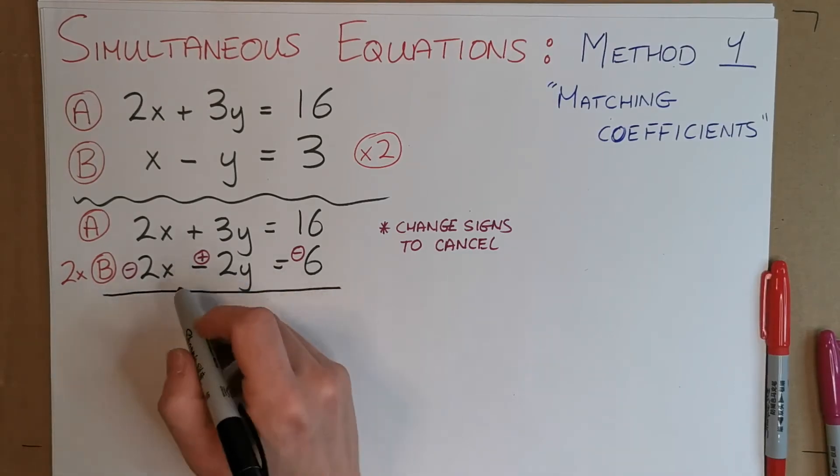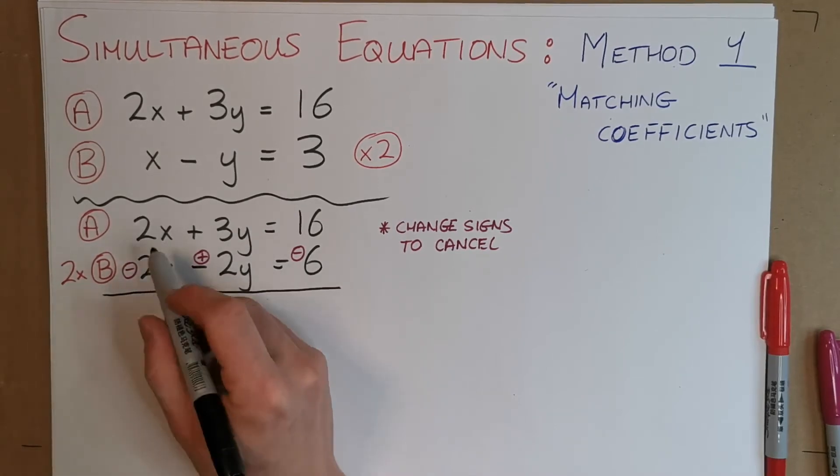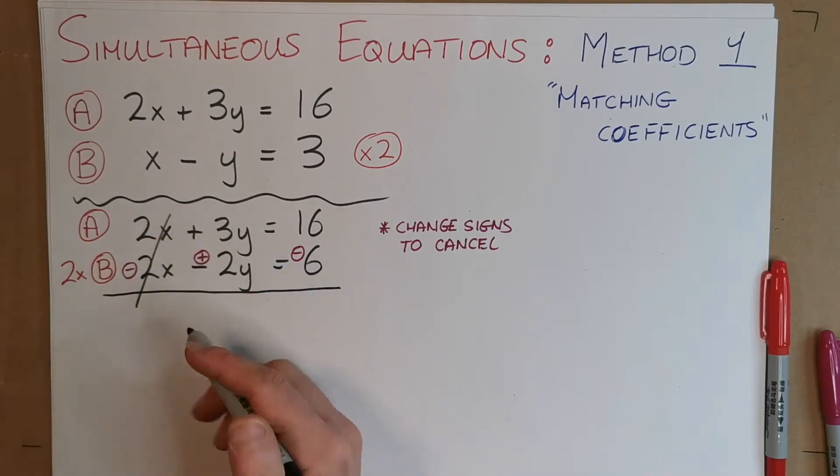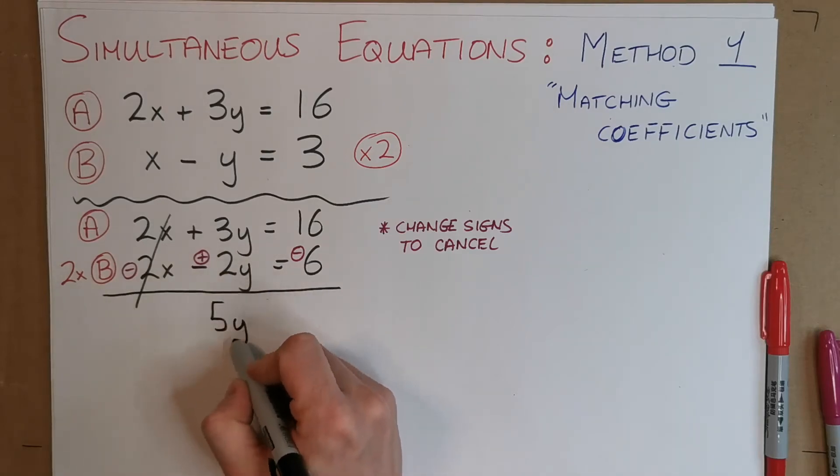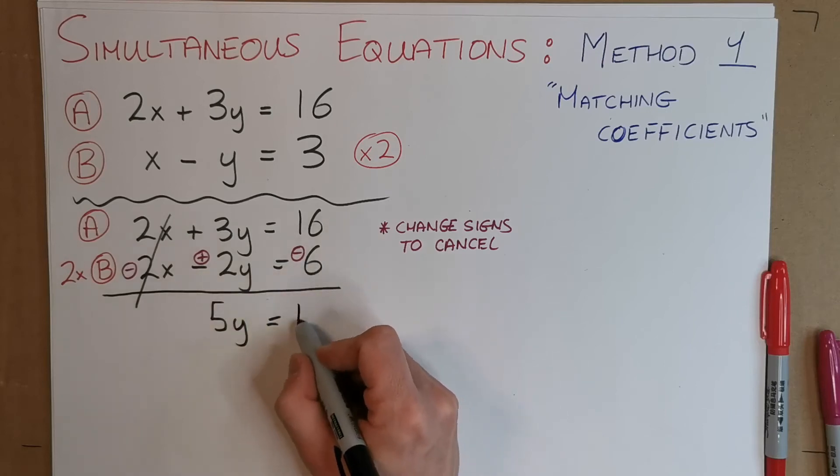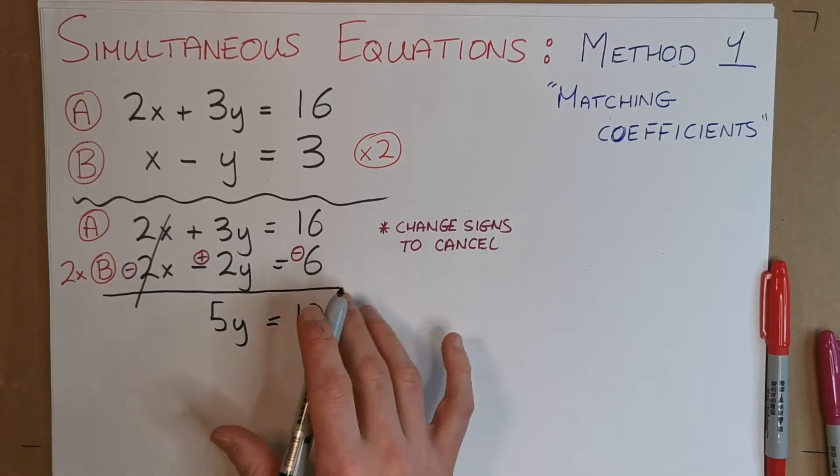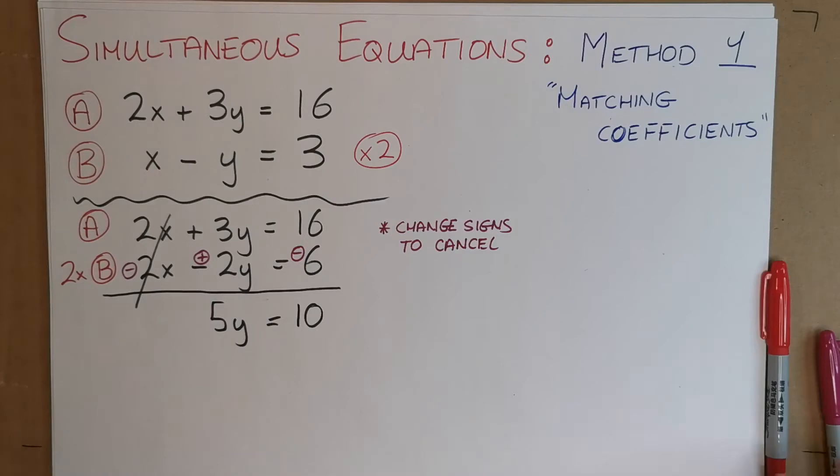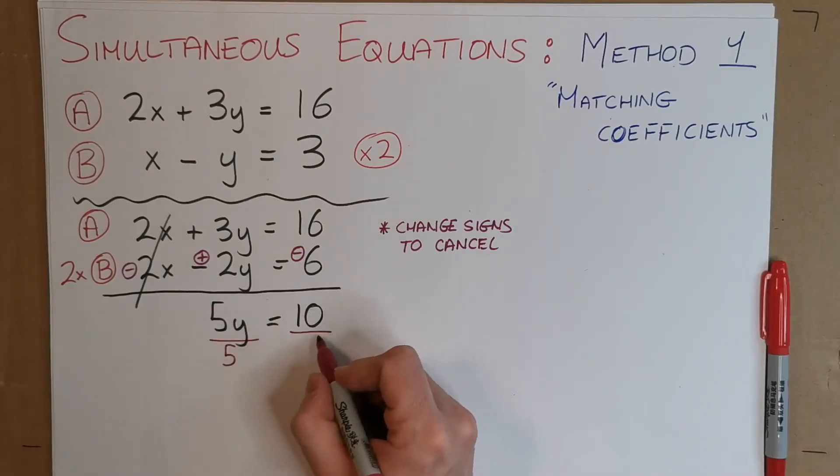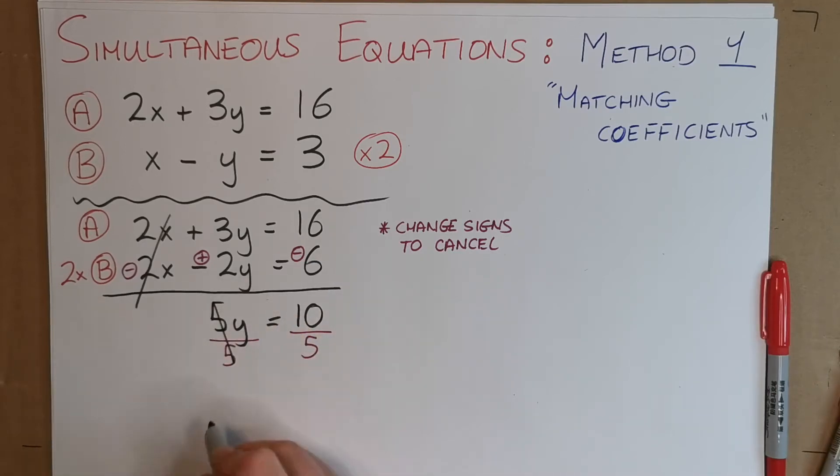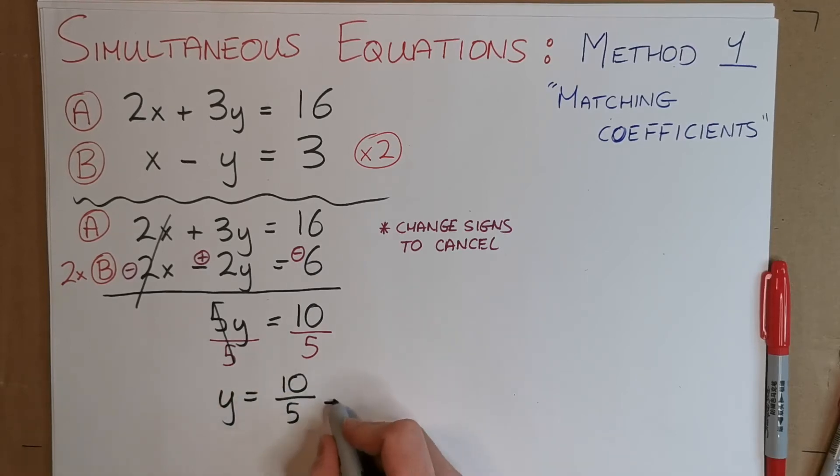Now I draw a line underneath. And I add. It might seem like subtract, but that's not what you're doing here. You're actually adding. So 2X minus 2X - they've cancelled. That's the reason why we did this. Now, 3Y and our new is a plus 2Y - 3Y plus 2Y gives us 5Y. 16 and a minus 6 gives us 10. Therefore, we're down to 5Y equals 10. To get rid of this 5 with Y, we divide both sides by 5. That gets rid of that 5 and leaves me with Y equals 10 over 5, which is 2.